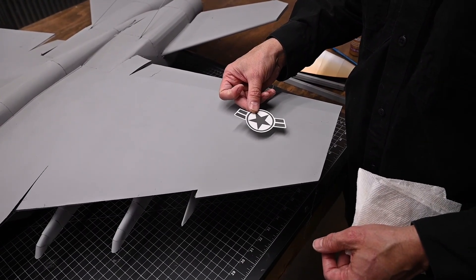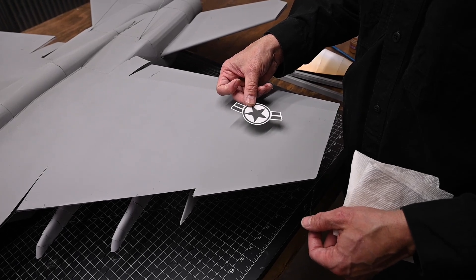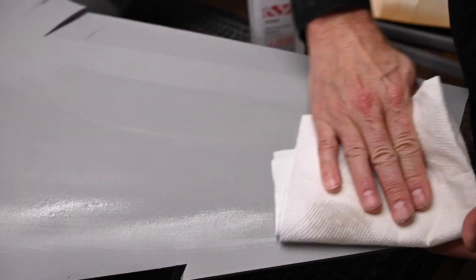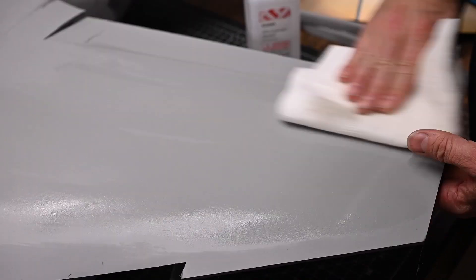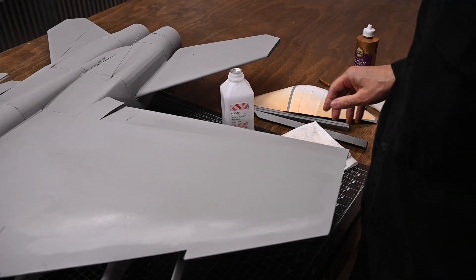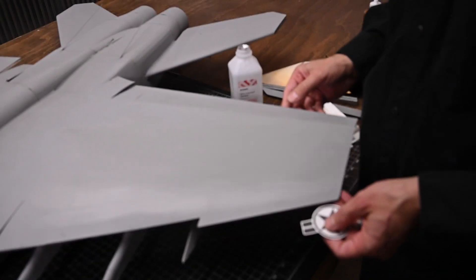Next I'm going to put an insignia out here on the wing. Just like before, we need to prep our surface before applying our decal.